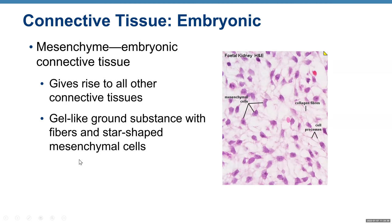Embryonic mesenchyme gives rise to all other connective tissue. It has a gel-like ground substance with fibers and star-shaped mesenchymal cells, as you can see on the histology slide — star-shaped cells, fibers, and ground substance making up the extracellular matrix between the cells.